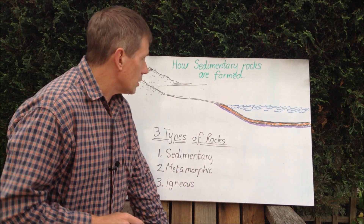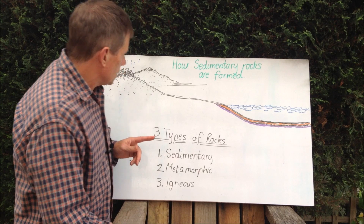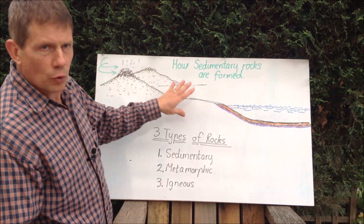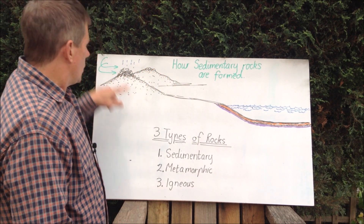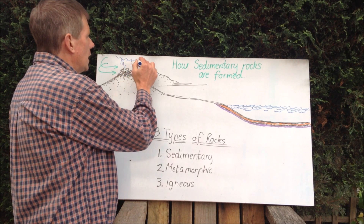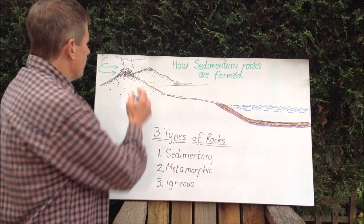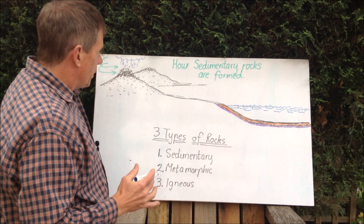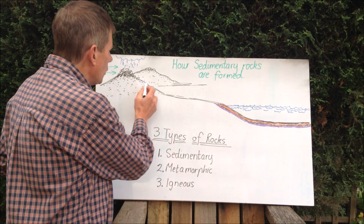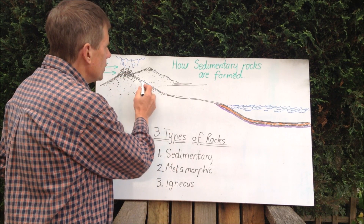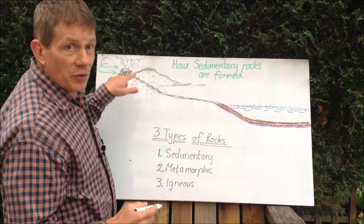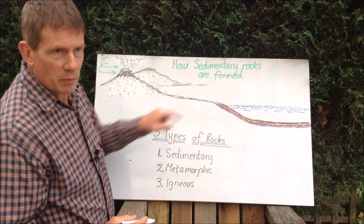Sedimentary rocks are formed because in the mountains, where there's trees and hills and all the landforms around the world, the wind blows, the rain falls, erosion starts to occur because of wind, rain, and extreme weather events. And slowly but surely, carried along with streams and rivers, are all the bits of sediment that end up at the bottom.